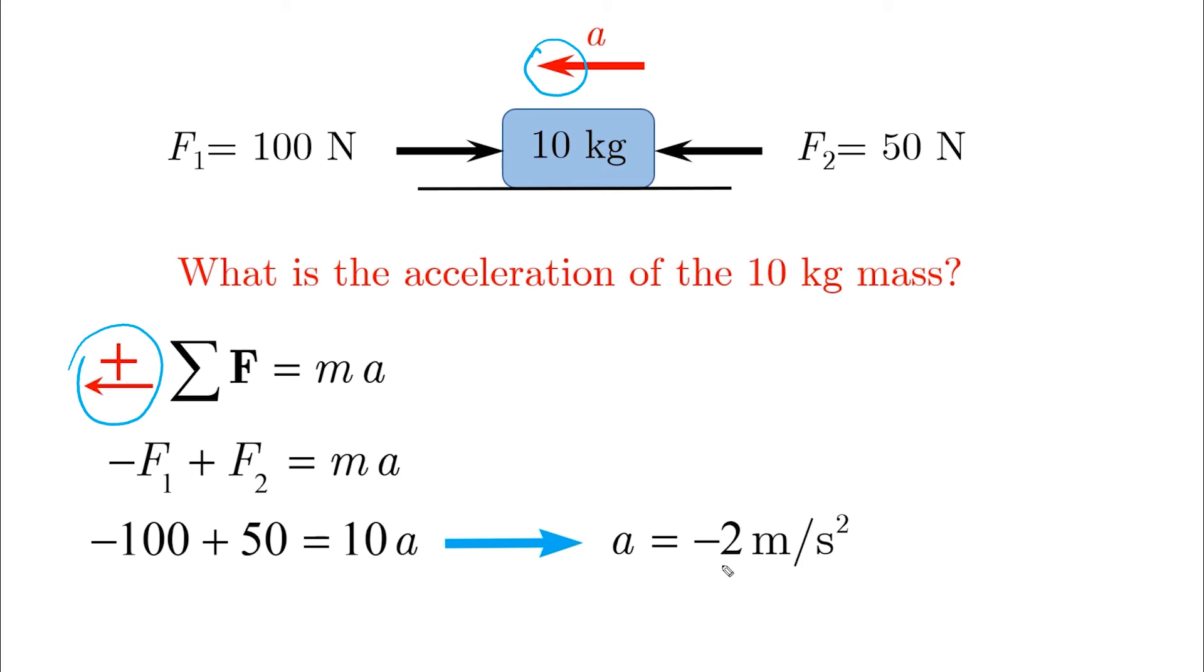And A now becomes minus two meters per second squared. And since we have minus, it is against the positive direction of the motion, which means that it points to the right. And this is exactly the same that we found by using the first approach.